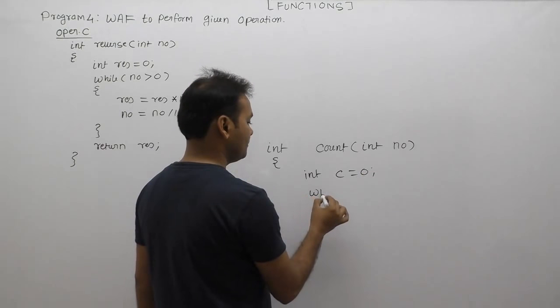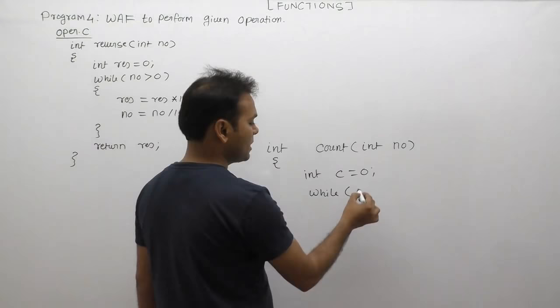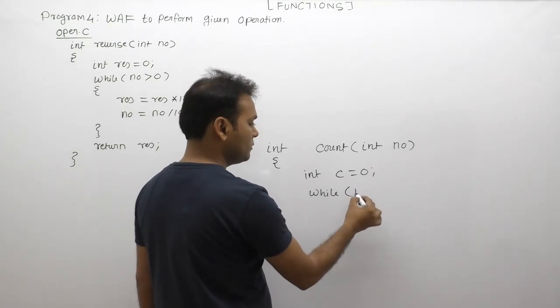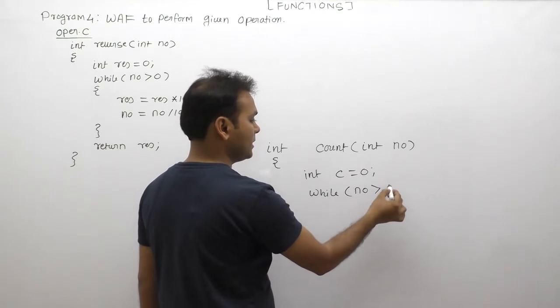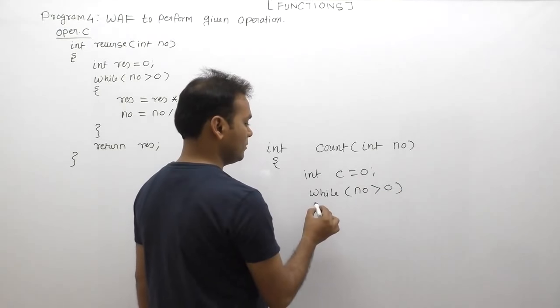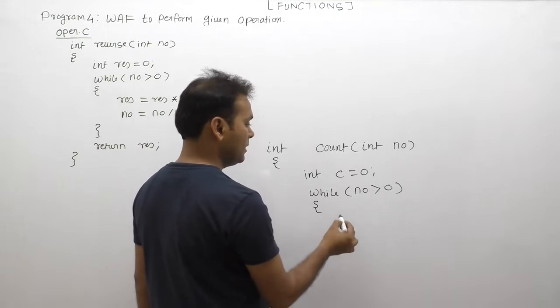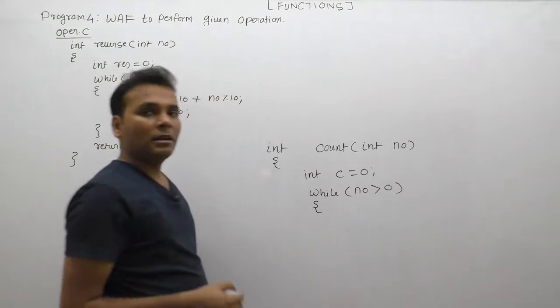While loop - the same condition, nothing changes. Number greater than zero. Again, body part simply every time last digit delete.